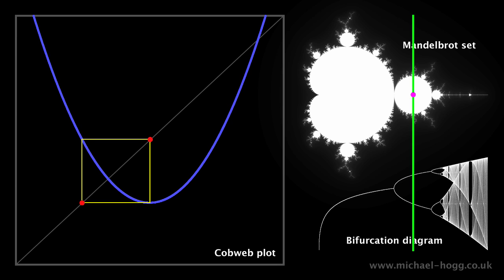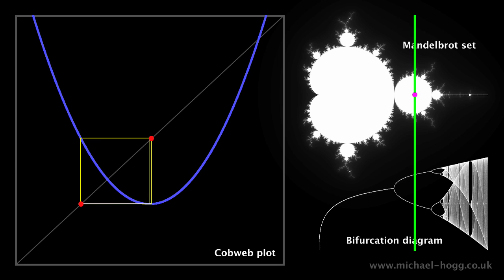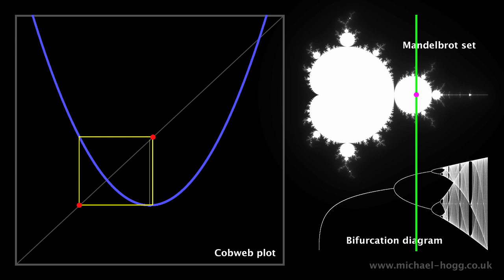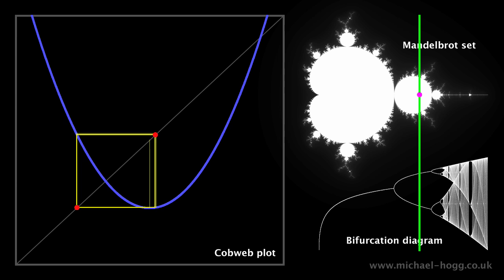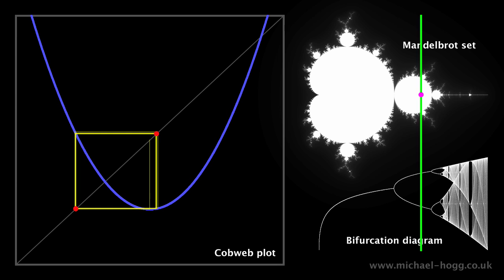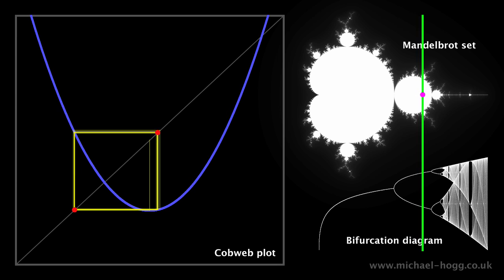As you can see, in the bifurcation diagram, the single curve has now split into two, and these will soon split again into four when the pink dot crosses over from the big circle to the little circle.